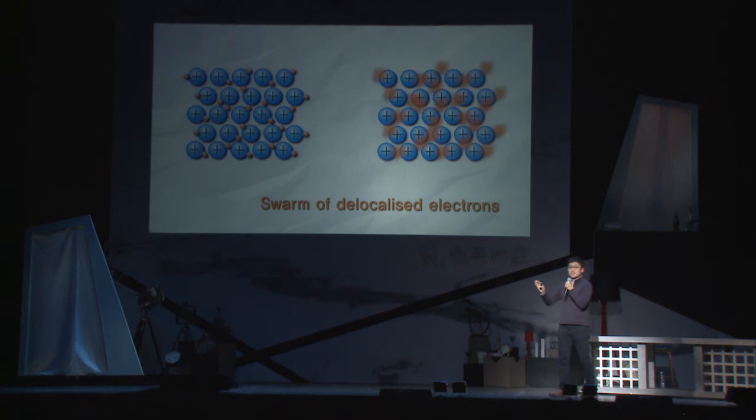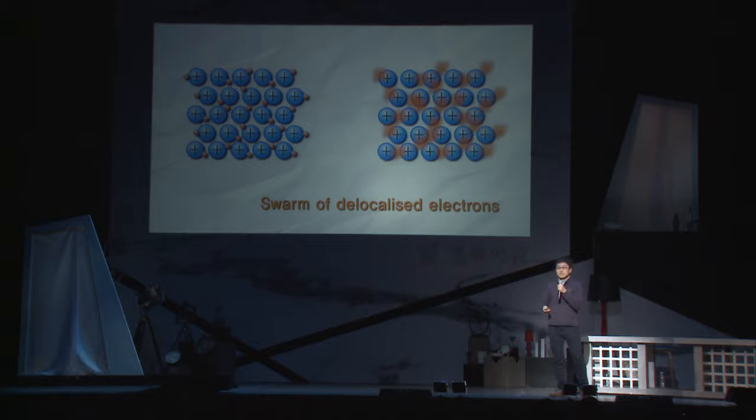이것만이 아닙니다. 이걸 좀 더 확장하면 우리 주변의 많은 물질들은 도체 아니면 부도체죠. 전기를 통하거나 통하지 않거나 그렇습니다. 전기를 통하는 물체는 그 안에 자유로운 전자가 있어서 그런데, 자유로운 전자가 만들어지는 과정은 양자역학에서 이루어집니다. 전자가 모든 원자에 동시에 존재하는 상태에 놓이게 된 겁니다. 그러면 자유로워지는 거죠. 따라서 양자역학은 바로 20세기 문명을 끌어갔던 중요한 전자공학, 반도체, 도체, 부도체를 설명하는 중요한 이론이었던 겁니다.